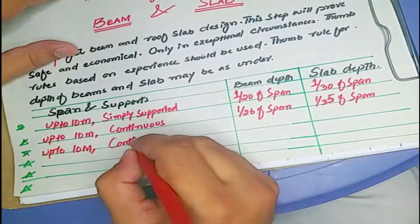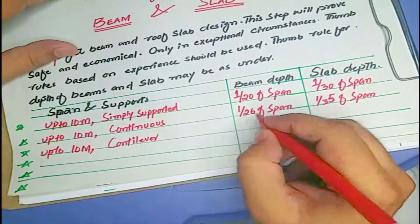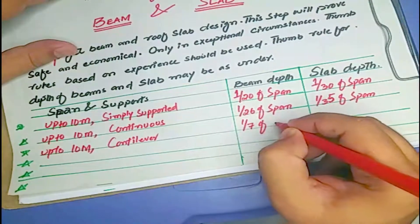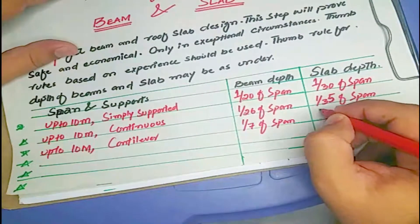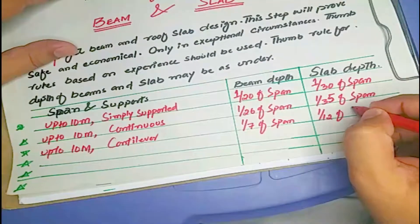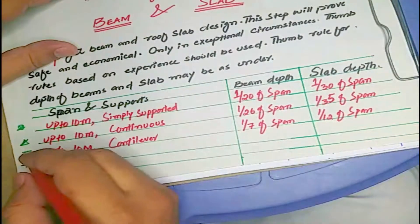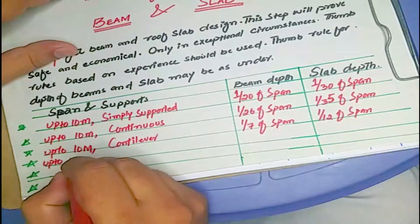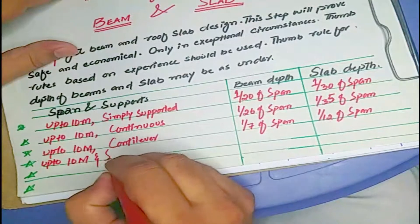When the span is up to 10 meters and the support condition is cantilever, the depth ratio for a beam is 1/7 of the span, and for a slab it is 1/12 of the span.